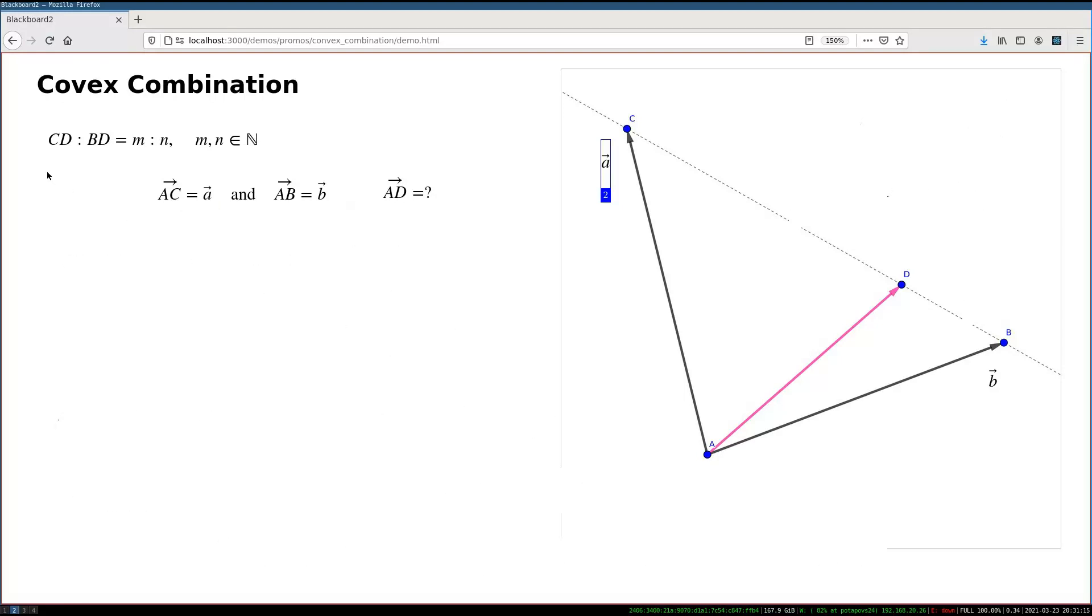Now, given that we have a preset proportion of the length CD to BD, I can transfer this into the relation that the length CD, this length, relates to the length CB, the larger one, as M to M plus N.